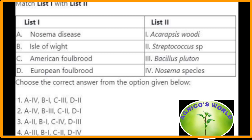Matching of list one with list two: Nosema disease is caused by Nosema species; Isle of Wight disease is caused by the mite Acarapis woodi; American foulbrood is caused by Bacillus larvae; European foulbrood is caused by Streptococcus species. So here the right option is option one.